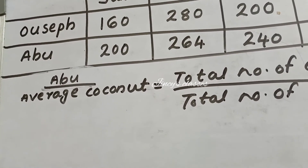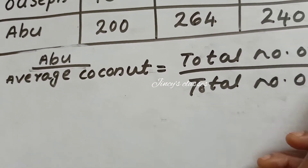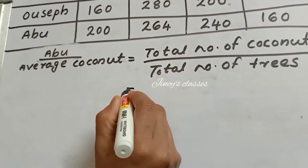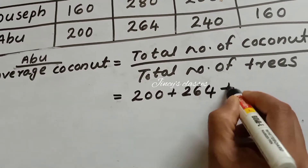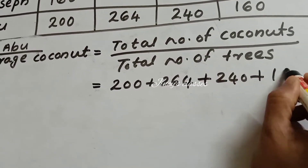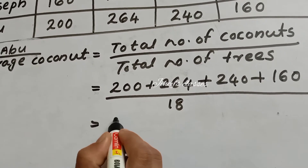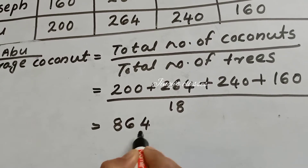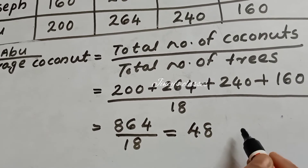Abu has 18 coconut trees. The average coconut is equal to total number of coconuts divided by total number of trees: 200 + 264 + 240 + 160 divided by 18. We get 864 ÷ 18 = 48 coconuts per tree on average. So now we can say that Abu's coconut plantation is doing a better job.